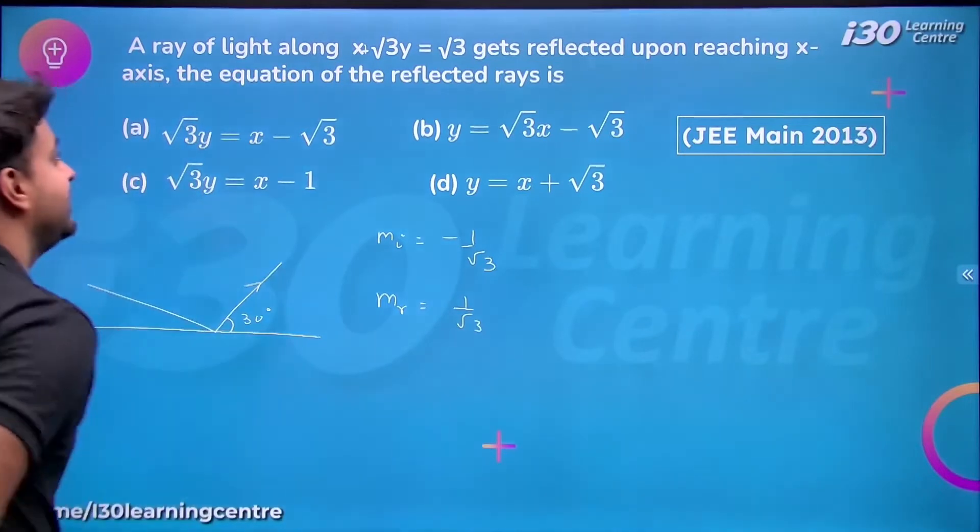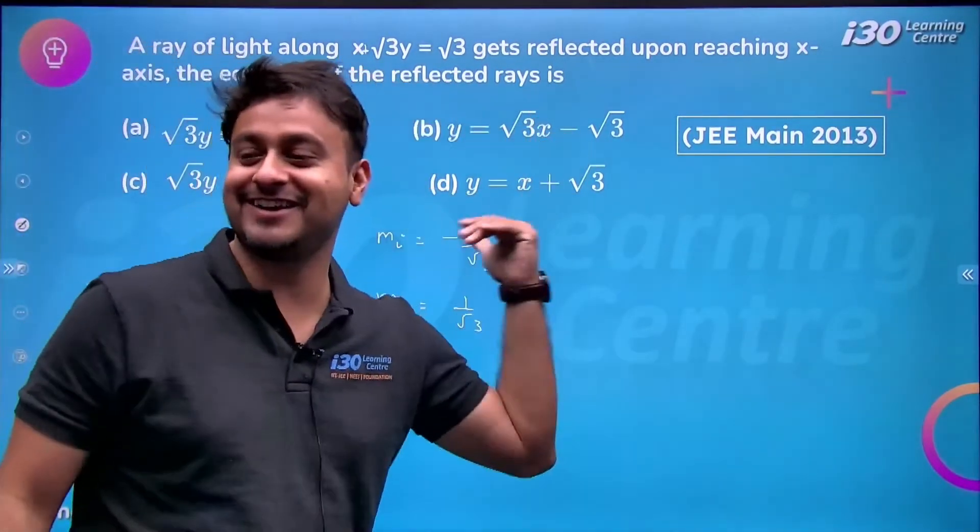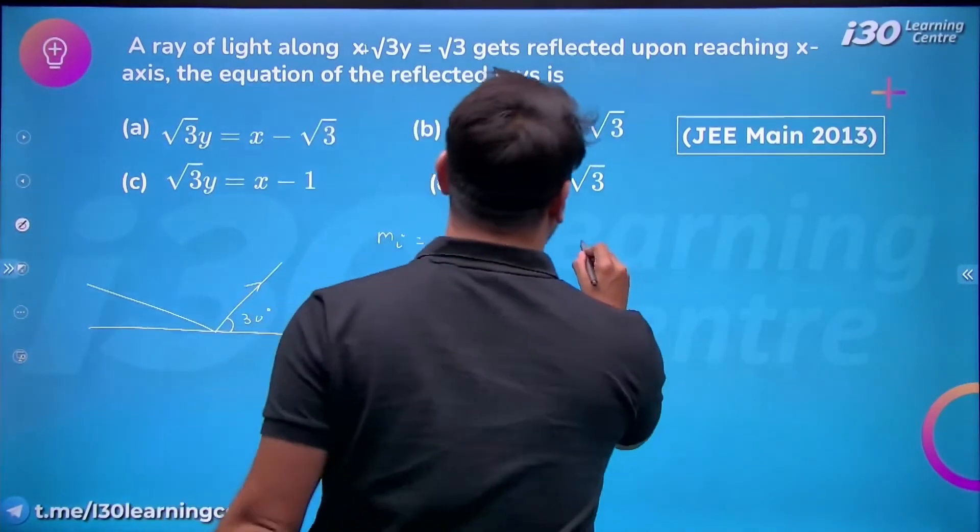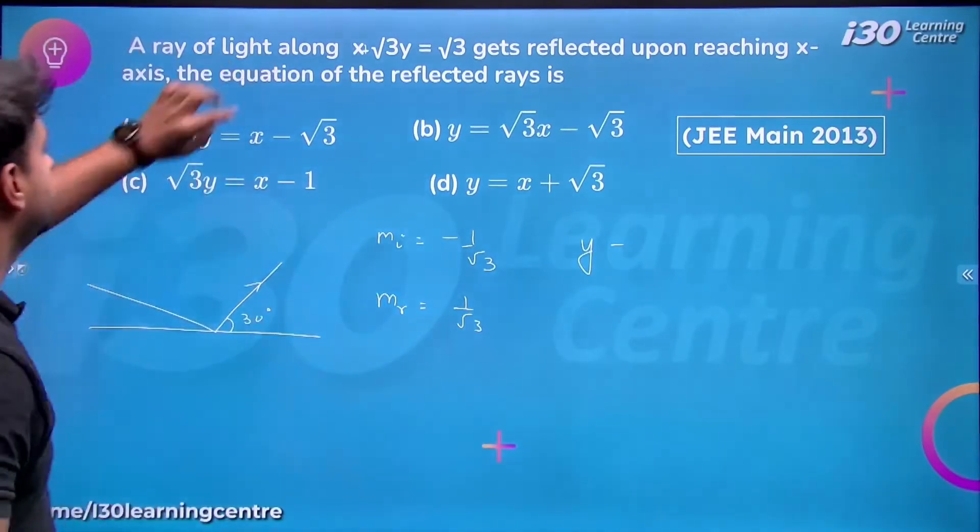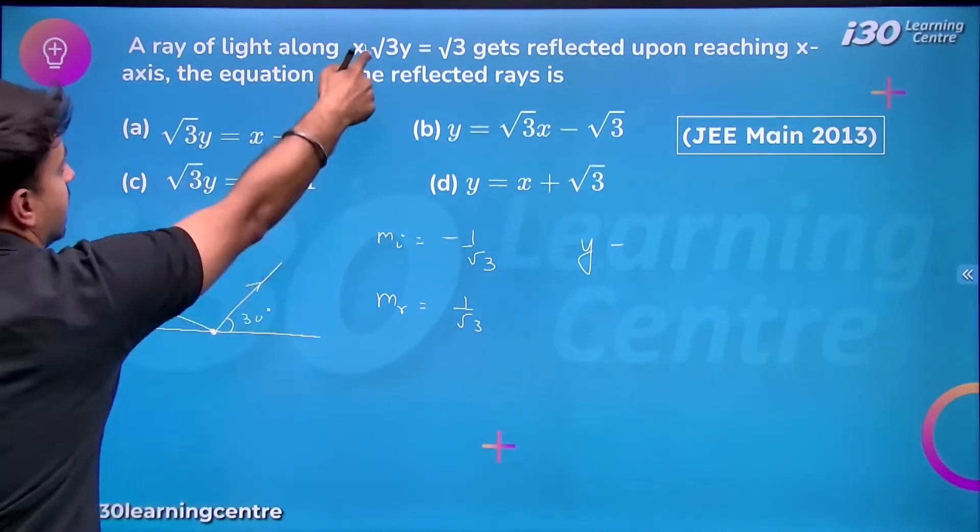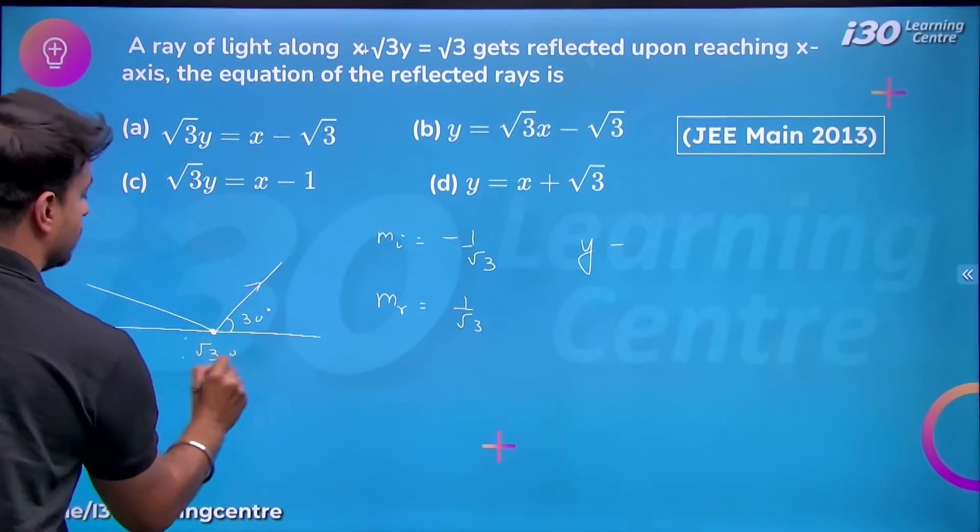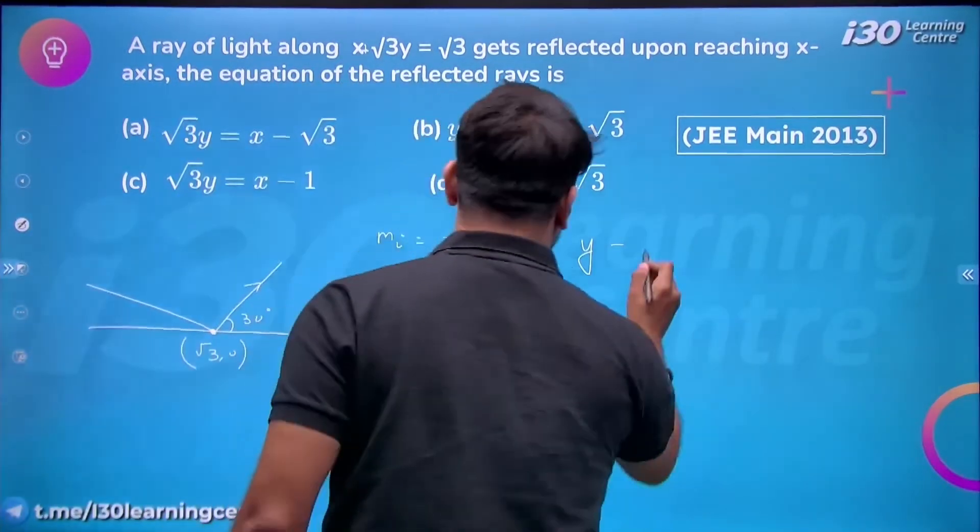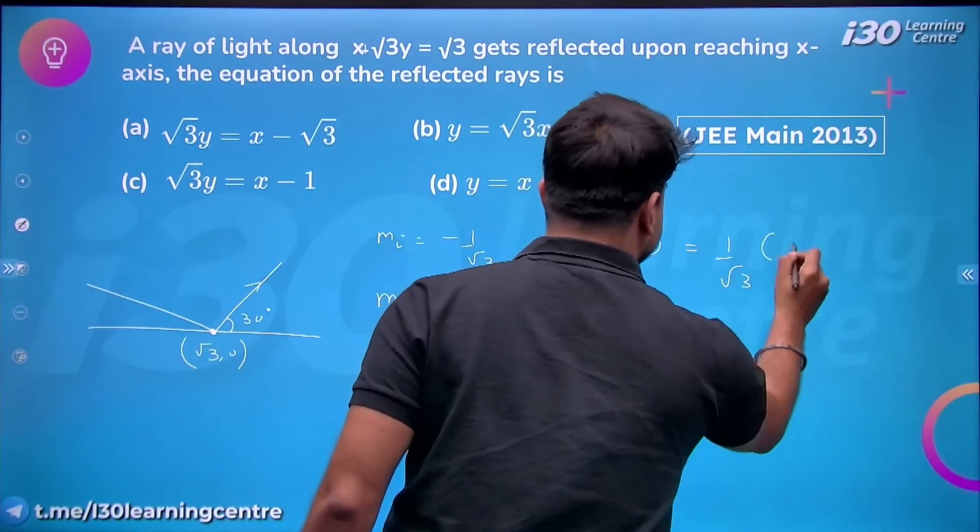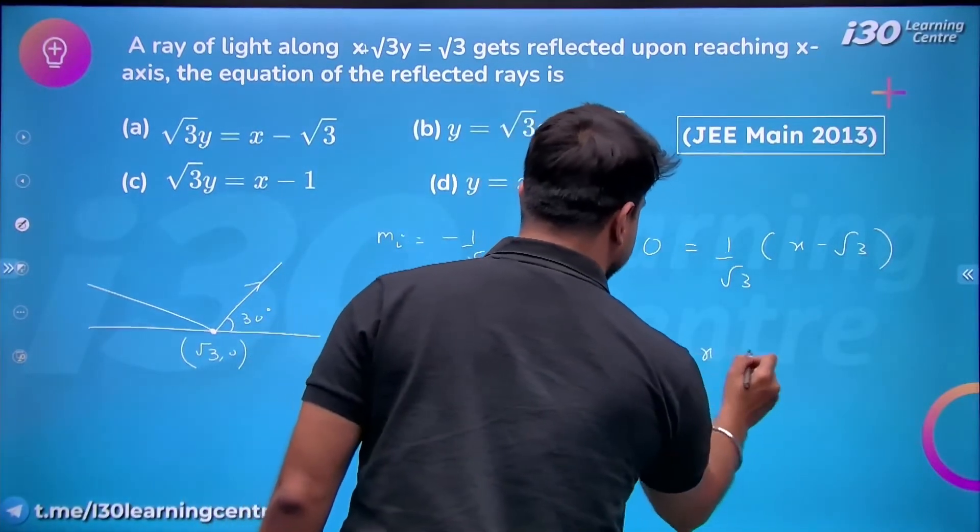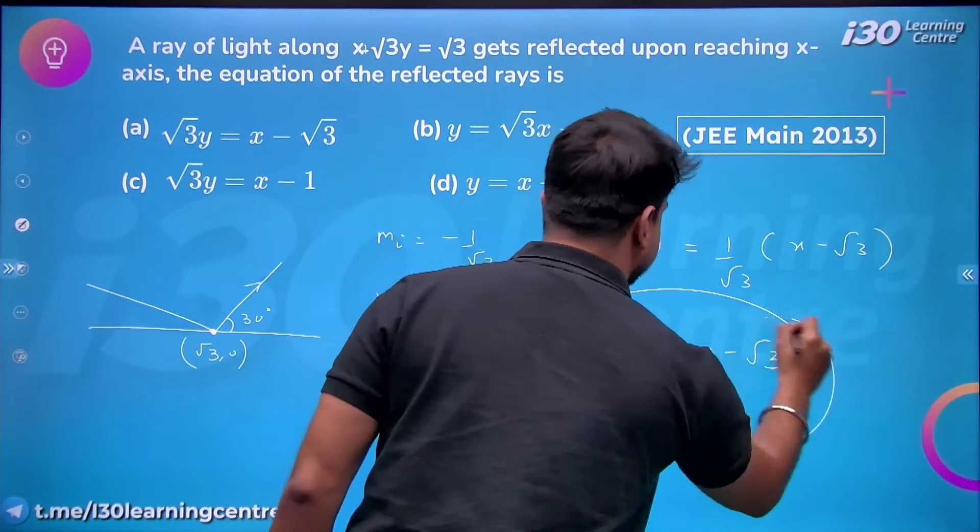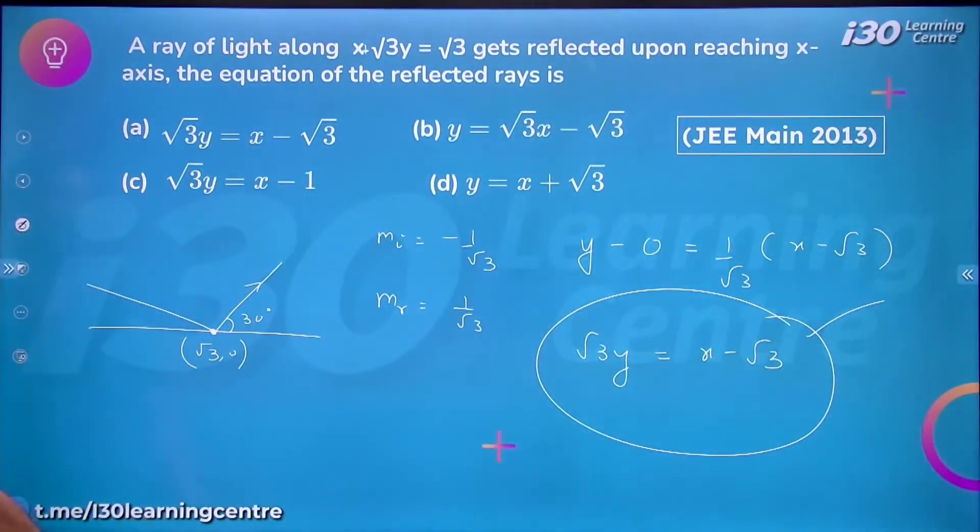We also have the point, so this is an NCERT level question. The equation will be y - y₁ = slope(x - x₁). It will pass through the incident point. If you put y = 0, x becomes √3, so it passes through (√3, 0). So y - y₁ = slope(x - x₁), we get √3y = x - √3. What an amazing and easy question! All basic concepts. That's why option A will be correct.